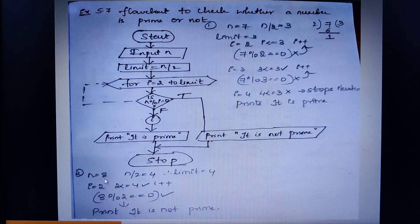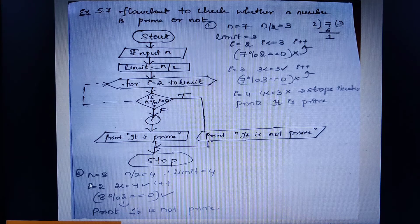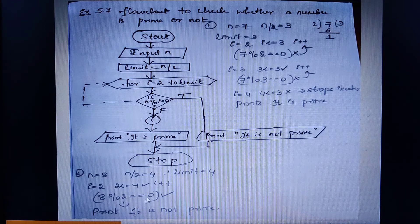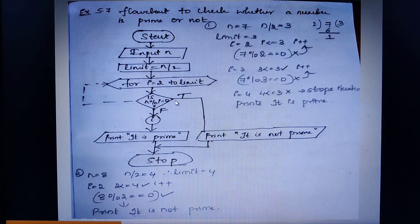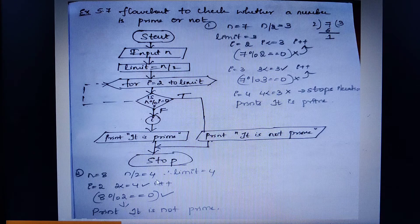Now let us take n equal to 8. n by 2 is 4, so limit equals 4. Initially i=2; 2 is less than or equal to 4 — condition true. Check: 8 mod 2 — 2 fours are 8, remainder is 0. Since this condition is true, the true part executes and it prints 'not a prime number'. Therefore 8 is not a prime number because it has integer divisor 2.